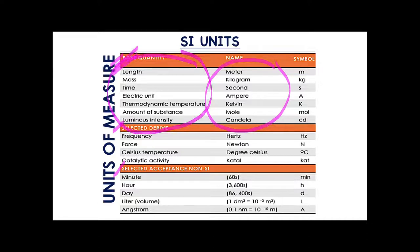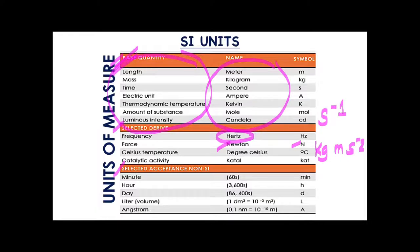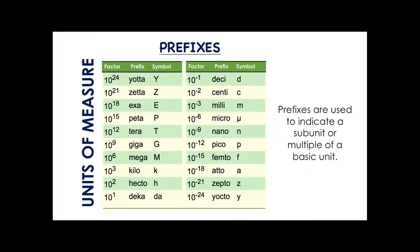For example, frequency has a base quantity expression, and force is measured in Newtons with its corresponding symbol and base unit. Those are your selected derived quantities — derived units that are exponents, products, or quotients of base units. We also have selected accepted non-SI units such as minute, hour, day, liter for volume, and the angstrom. Those are your SI unit categories.